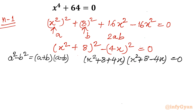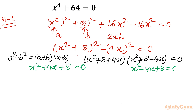Now we have to solve two quadratic equations. Let me write them quickly and then solve both in parallel. The first quadratic equation is: x-squared + 4x + 8 = 0. The second is: x-squared − 4x + 8 = 0. You can solve them together by using a combined plus-minus sign.